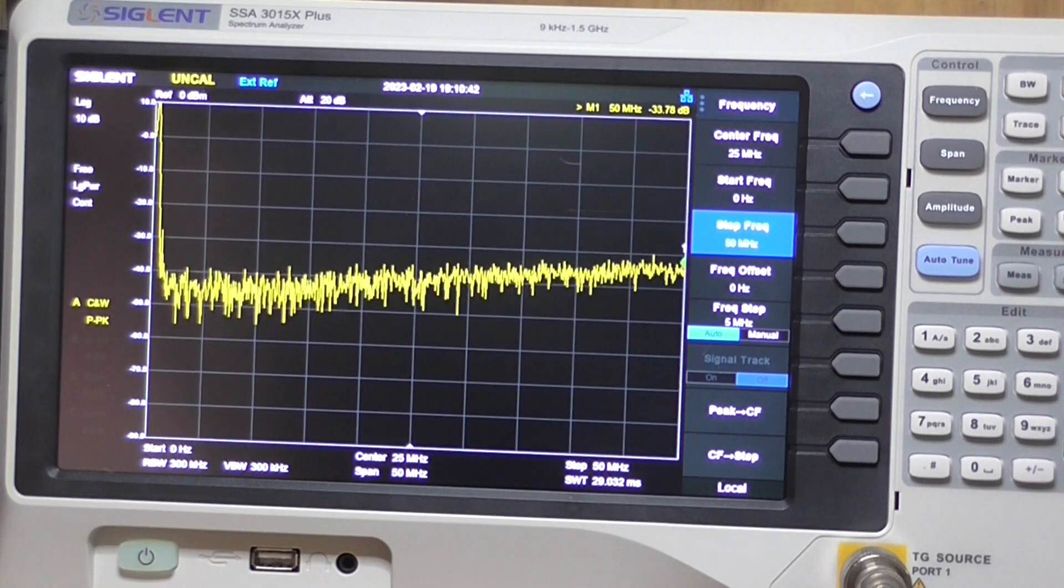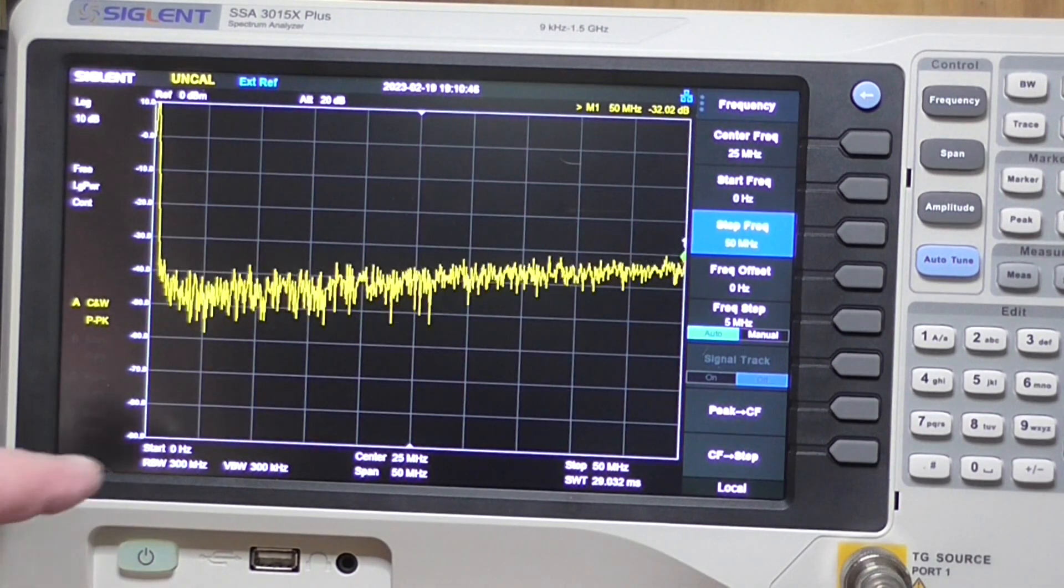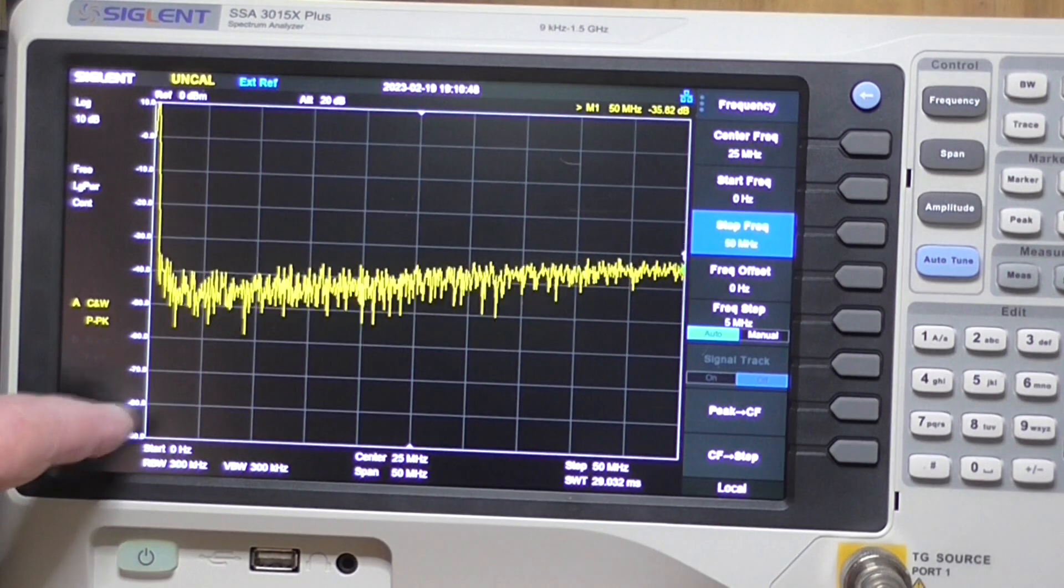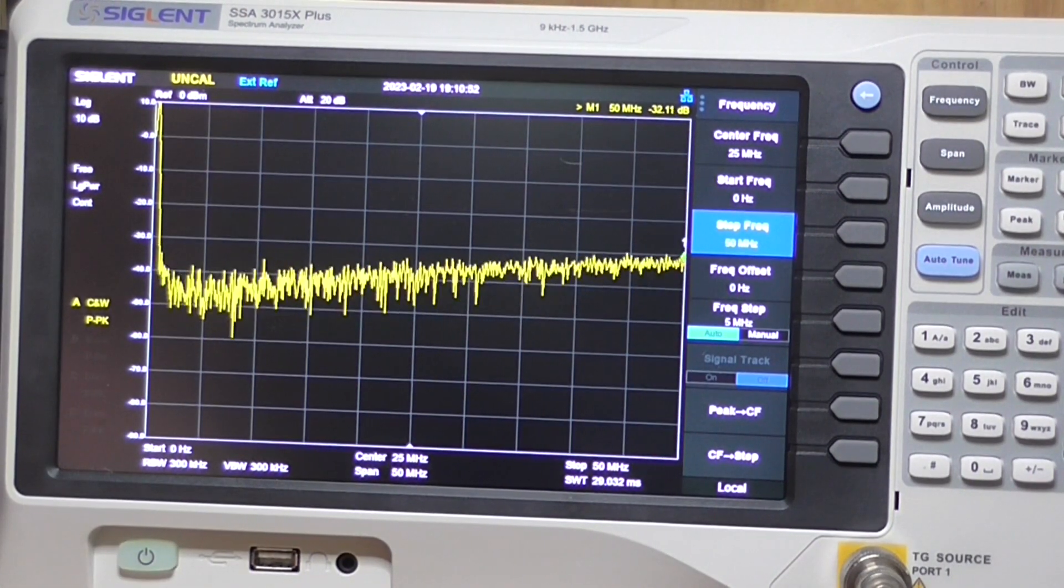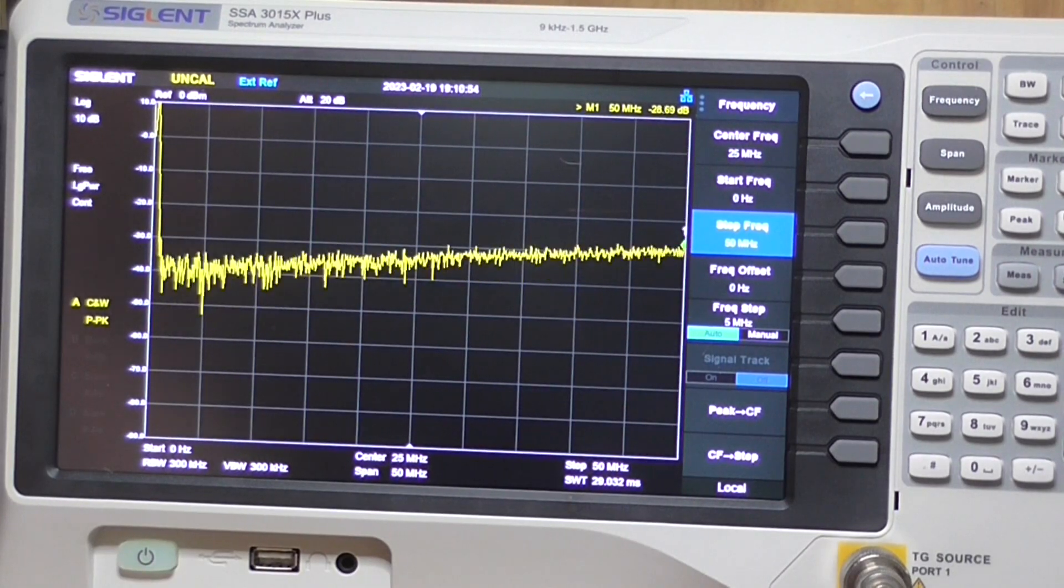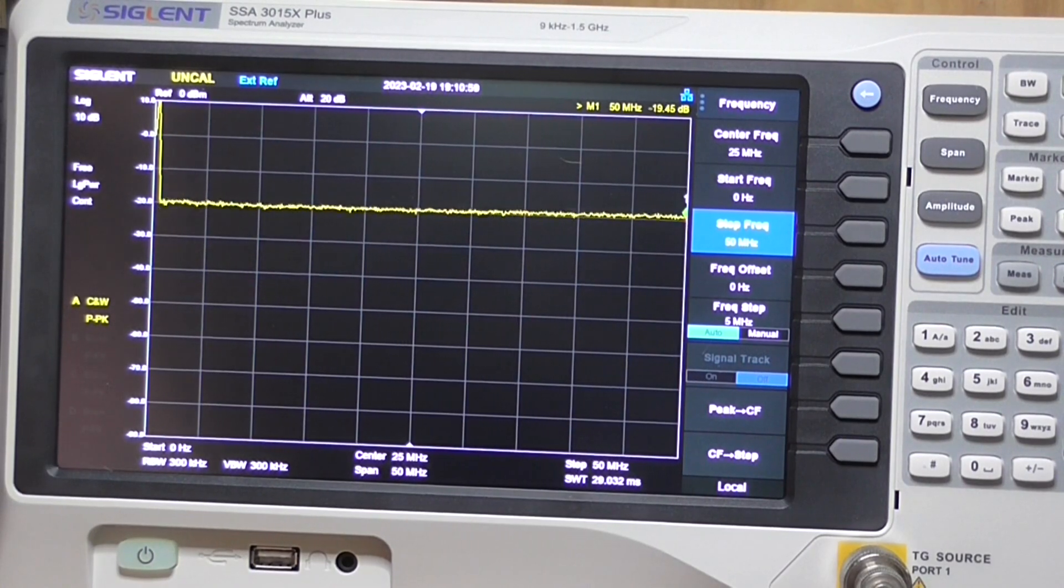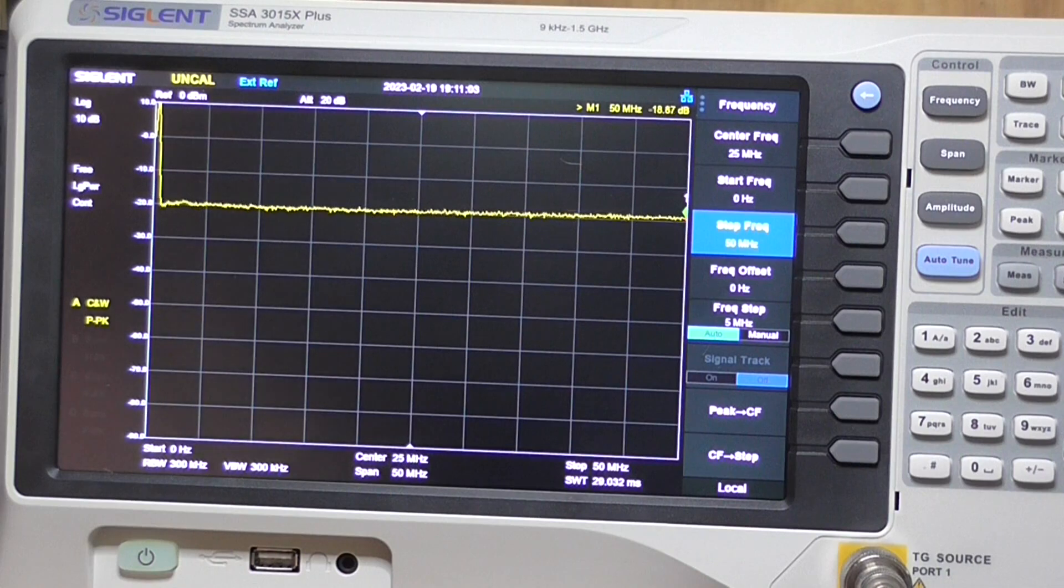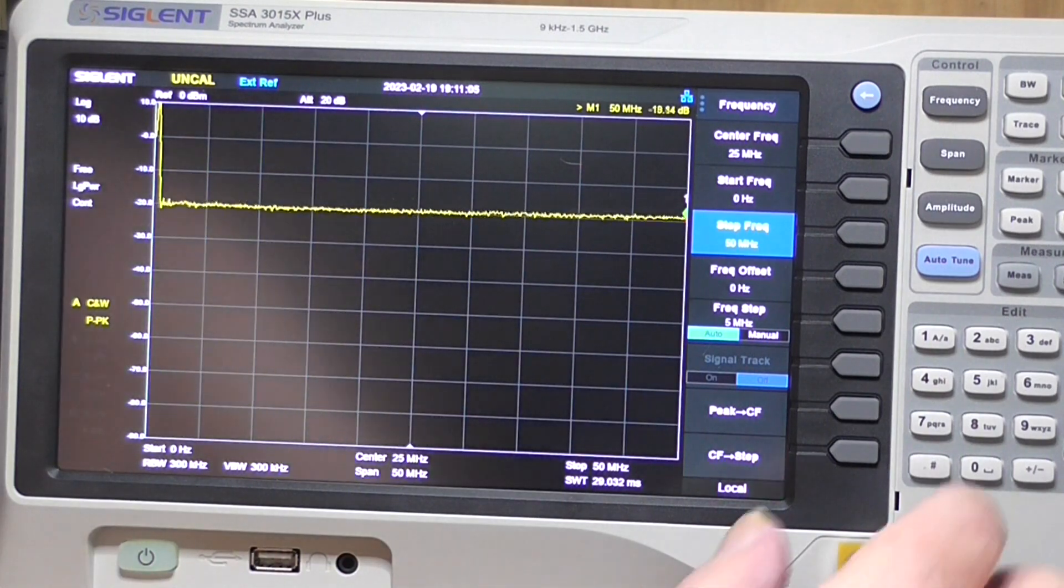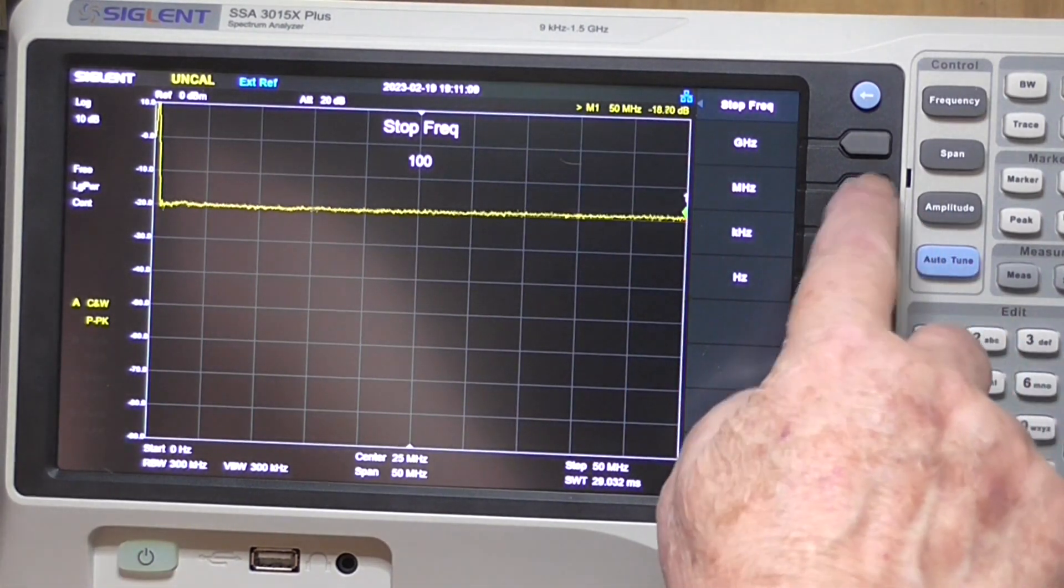Still not right—82 dB would be way down here. We'll switch the attenuators out of circuit. Here we have 20 dB in and we're fairly flat at 20 dB up to 50 megahertz. Let's try a little higher—let's go to 100 megahertz.